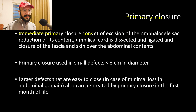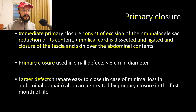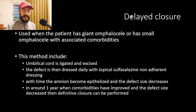Immediate primary closure consists of excision of the omphalocele sac, reduction of its contents, dissection and ligation of the umbilical cord, and closure of fascia and skin over the abdominal contents. Primary closure is used for small defects less than 3 cm, and also for larger defects that are easy to close with minimal loss in abdominal domain — performed within the first month of life.